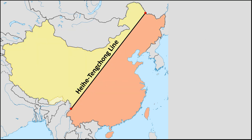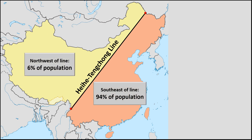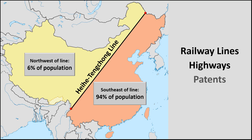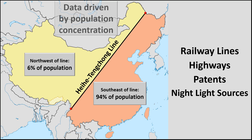Although the Heihe-Tengchong Line was originally intended to show population distribution, people have adopted the line to illustrate all sorts of data related to China. Maps available on the internet illustrate this line over data related to rail lines, highways, locations where patents have been obtained, and even nighttime light sources. But much of this data merely shows byproducts of higher concentration of residents.